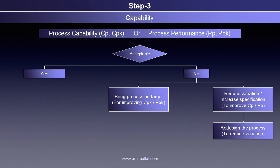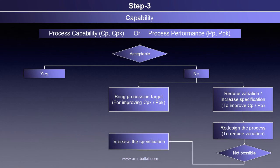Usually, a process that is stable tends to have the least variation, so we won't generally need to focus on reducing variation; our focus area can be to shift the target, as covered in the earlier step. If the process shows higher variation — that is, low CP or PP — reducing further variation after the process is stable is only possible after redesigning the process. A focused effort is required to redesign the process for reducing variation. If it is not possible to reduce variation further, an increase of specification range can be considered to achieve the desired level of capability or performance, after approval of the customer wherever required.